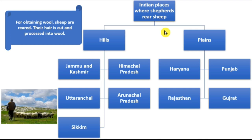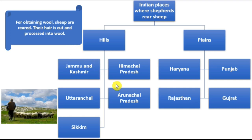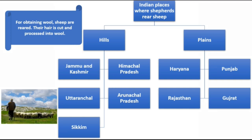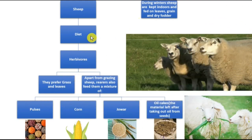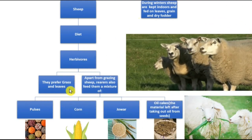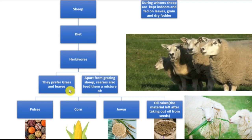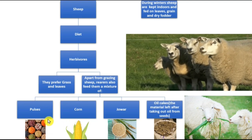Some Indian places where shepherds rear sheep: on the hills — Jammu and Kashmir, Himachal Pradesh, Uttaranchal, Arunachal Pradesh, and Sikkim; and in the plains — Haryana, Punjab, Gujarat, and Rajasthan. For obtaining wool, sheep are reared and their hair is cut and processed. Sheep are herbivores and prefer grass and leaves, but rearers also feed them a mixture of pulses, corn, jowar, and oil cakes.